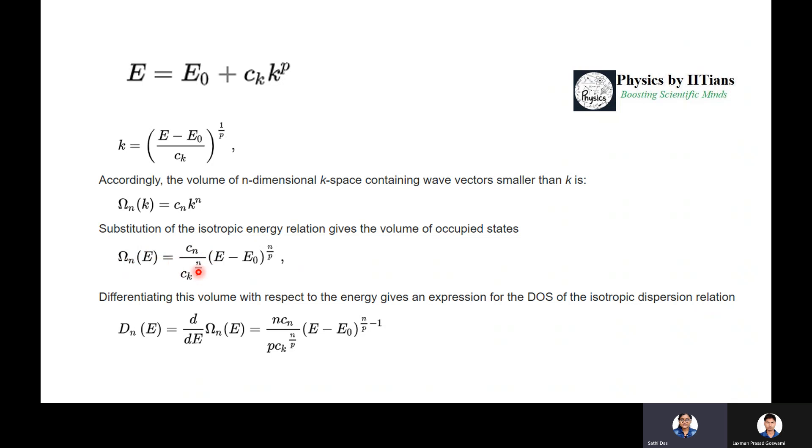To find the density of states, substitute the isotropic energy relation to get the volume of occupied states: Ωₙ(E) = (cₙ/cₖ)^(n/p)(E - E₀)^(n/p). Differentiating this volume with respect to energy gives the expression for density of states.